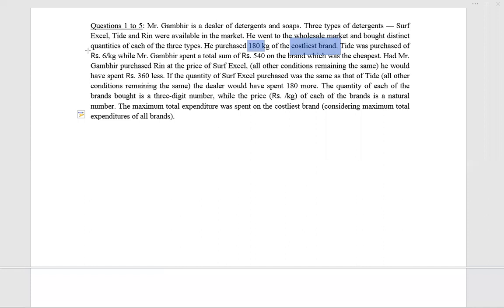It was purchased for rupees 64 per kg, but we don't know whether it is Surf Excel or not. He spent rupees 540 on the cheapest brand. Had Mr. Grumby purchased Rin at the price of Surf Excel with all other conditions remaining the same, he would have spent 360 rupees less. The quantity of each of the brands bought is a three-digit number, and the price of each brand is a natural number.